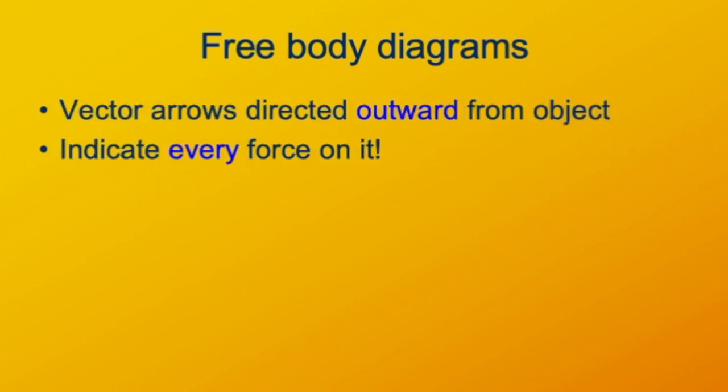To draw a free body diagram, you show the object or just a schematic representation of it, and then you draw vector arrows representing the forces acting on it directed outward from the object. So it doesn't matter if you're pushing into the object, you would draw a vector arrow going away from the center of the object. It's important in a free body diagram to include every force that matters. Sometimes you can leave out canceling forces, but it's certainly not necessary to do so.